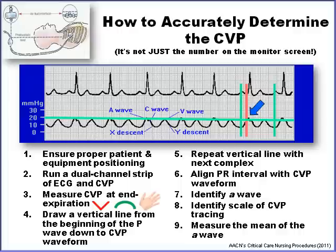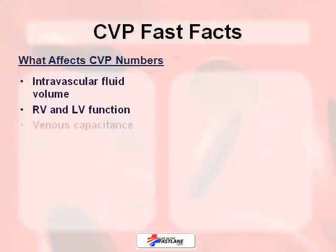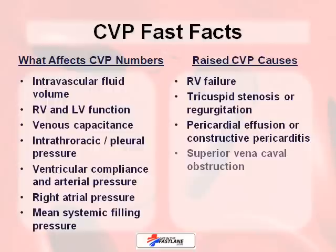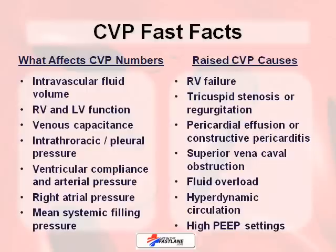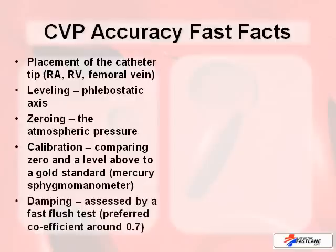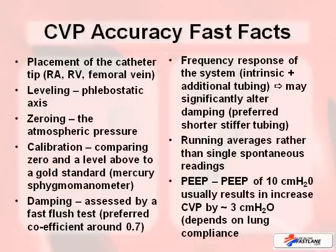In this case, it looks like around 20. Here are some quick CVP fast facts from the website Life in the Fast Lane about what affects CVP numbers. Volume status and anything preload-related will affect your numbers. High PEEP settings can definitely affect it, as well as anything going on with your heart, including fluid overload. Some fast facts about the accuracy of CVP placement are listed there as well for your reference.